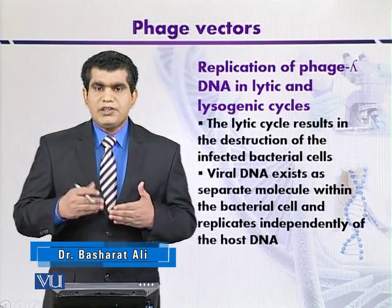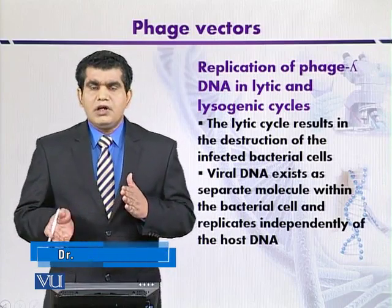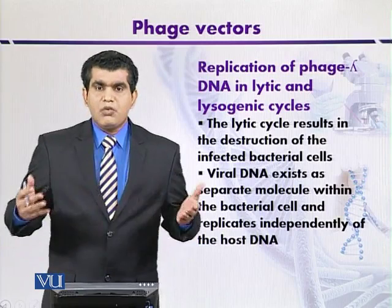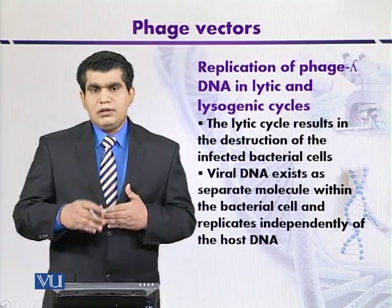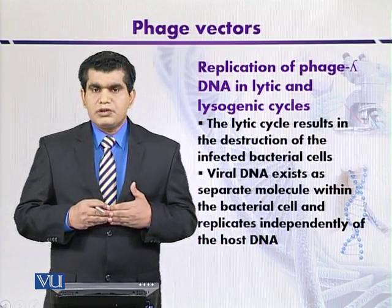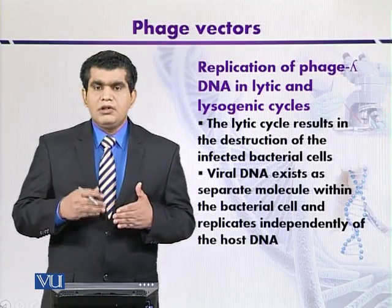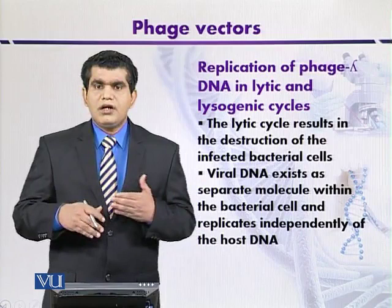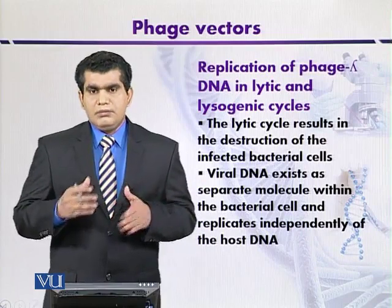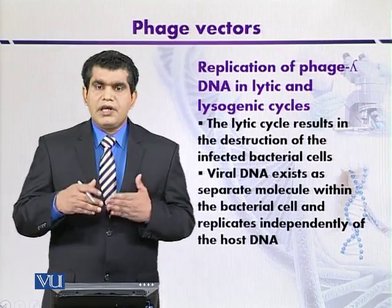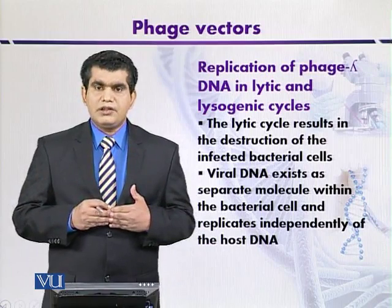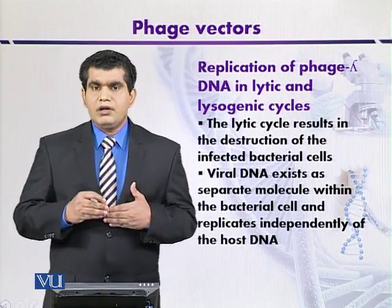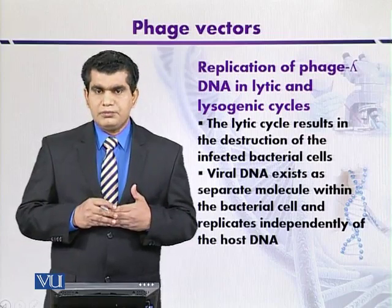With the passage of time, even after 25 minutes or slightly more, the Lambda genome can produce around 200 phages through replication. After packaging, they can lyse the host cell and are released, ready to infect new host organisms.